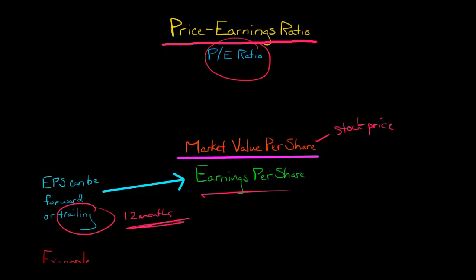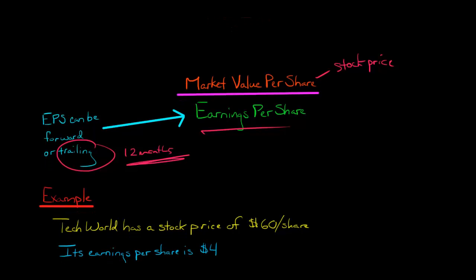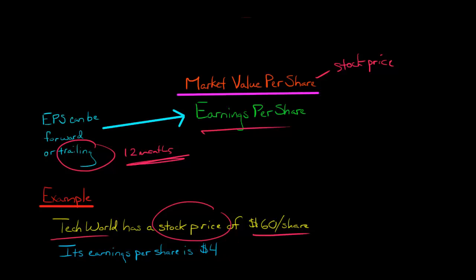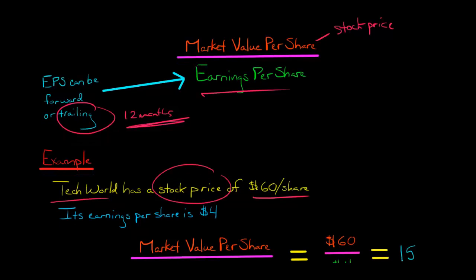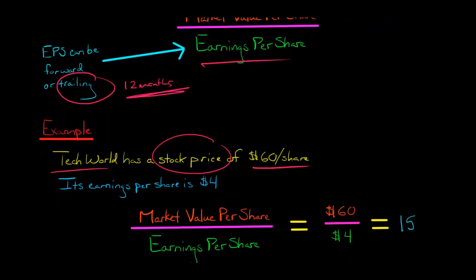Let's get into the mechanics. Let's say we have a company called Tech World, and they have a stock price of $60 a share, and their earnings per share is $4. If we plug these numbers into our formula, we get 60 divided by 4 equals 15. That's the P/E ratio for Tech World.